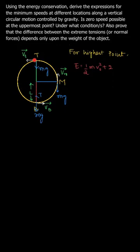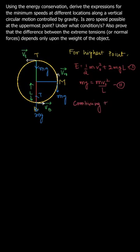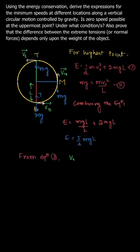At the topmost point there is no tension — there is only weight. At the bottom most point there is weight as well as tension. If we write the equation for energy at the topmost point, it will be the combination of kinetic energy and potential energy: half m vt squared plus 2mgl, which is the potential energy.